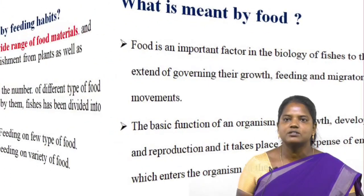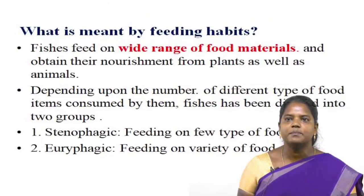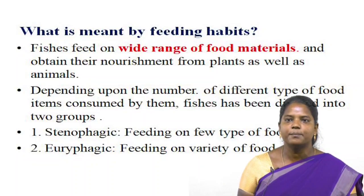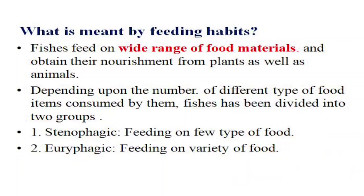What is meant by feeding habits? Fishes feed on a wide range of food materials and obtain their nourishment from plants as well as animals, depending upon the number of different types of food items consumed by them. Fishes have been divided into two groups: first one is stenophagic, meaning feeding on few types of foods; second one is euryphagic, meaning feeding on a variety of food.